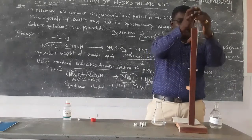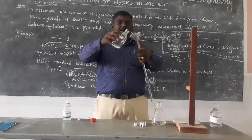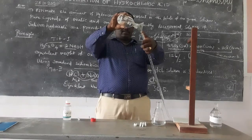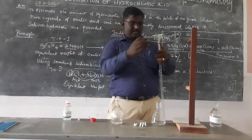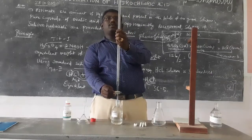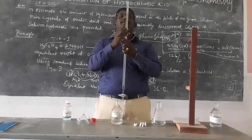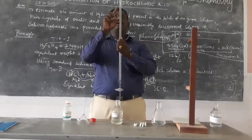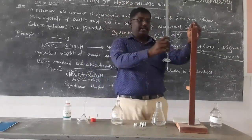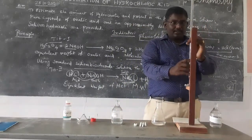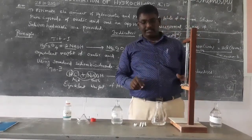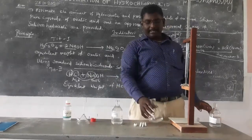We now have a standardized solution of HCl. We report the normality. We have zero initially, then the lower burette reading is zero. After titration, sodium chloride is formed as the product. We can use the sodium chloride solution for further calculations.